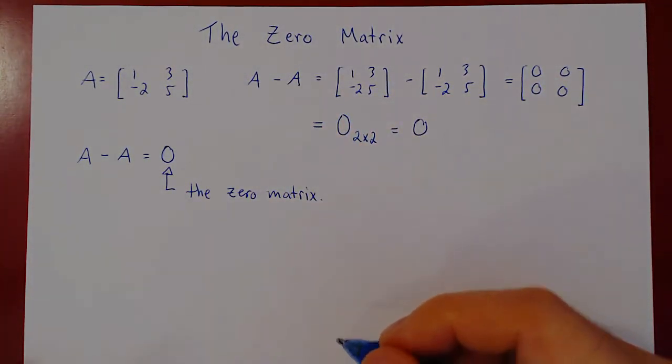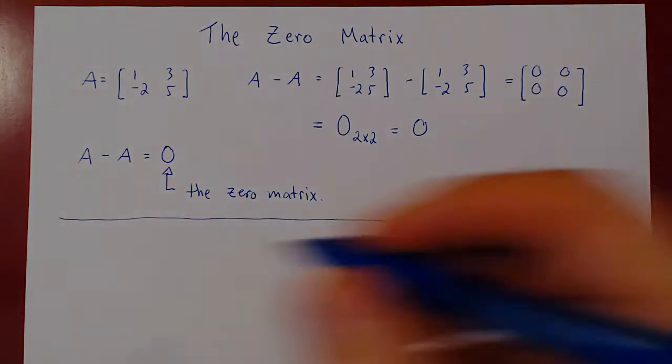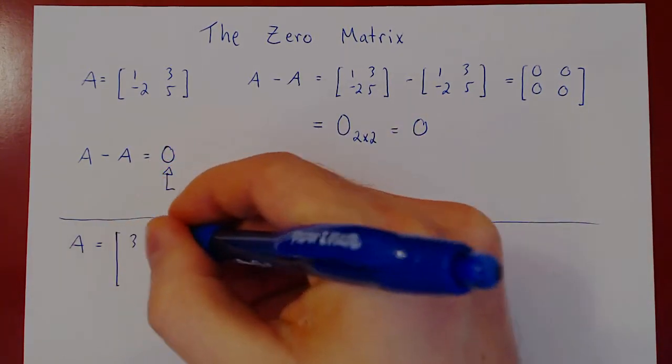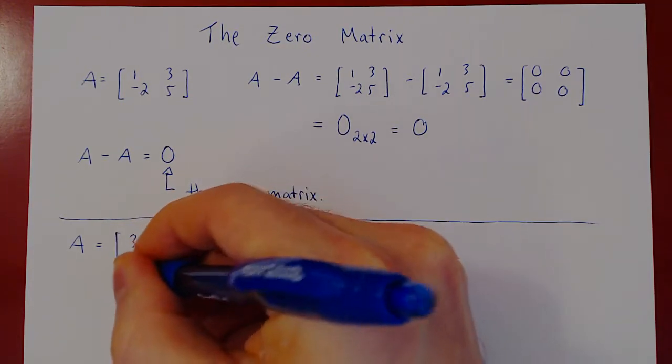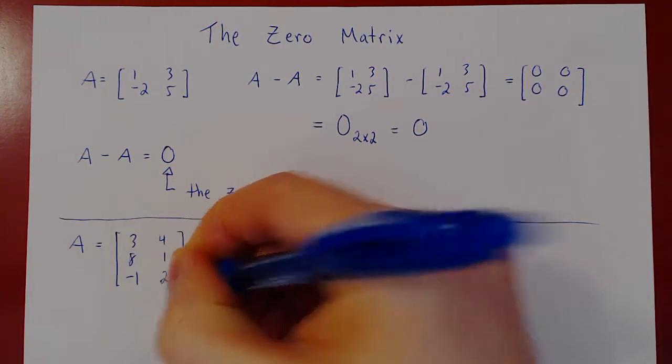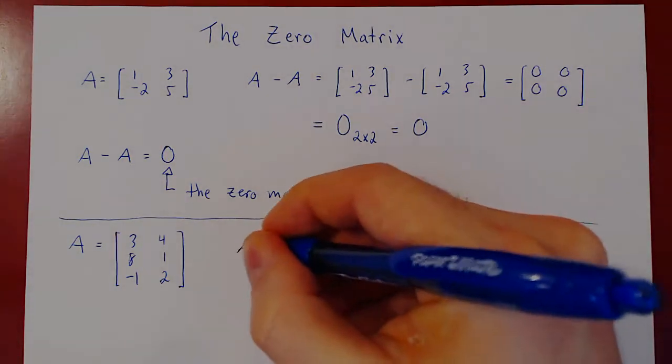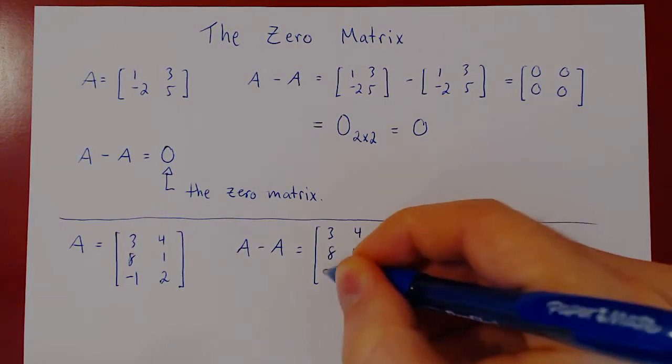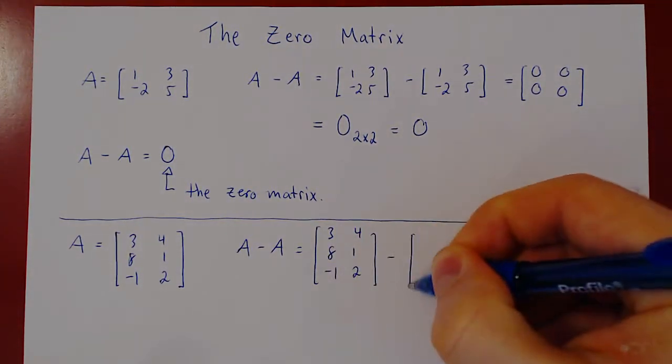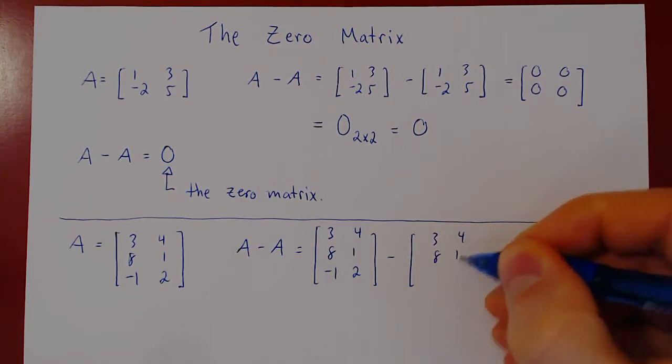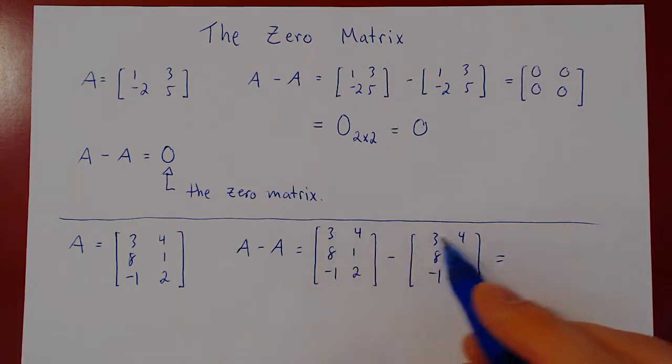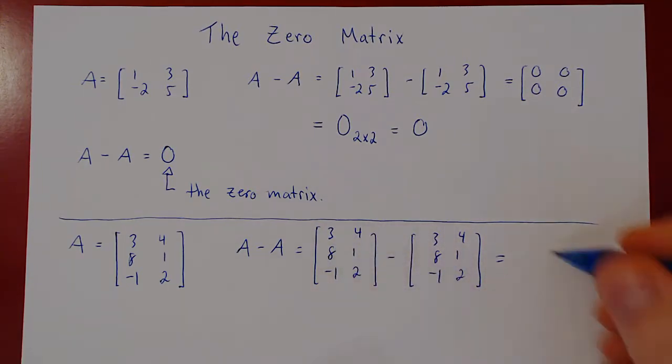Now the matrix A doesn't have to be square, right? You could look at a second example. Let's take a, say, 3 by 2 matrix. And once again, if we compute A minus A, when we subtract matrices, we subtract corresponding entries, as they are all the same, we get once again a matrix where every single entry is equal to zero.